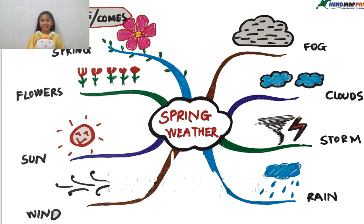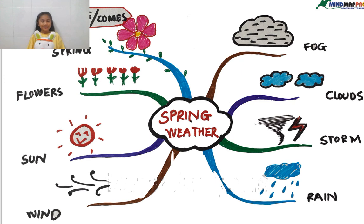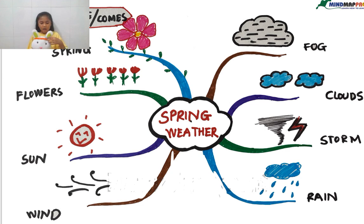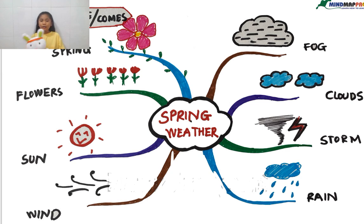Hello everybody, welcome to lessons today! Today we're going to be talking about spring weather. Yesterday we learned about the differences between autumn and spring. Today we want to talk about spring again and we're going to talk with our friend Aiko. Aiko is going to stay here because she has a story. While we are talking about this topic, we chose Aiko to be the person to talk because this topic wasn't just usual.